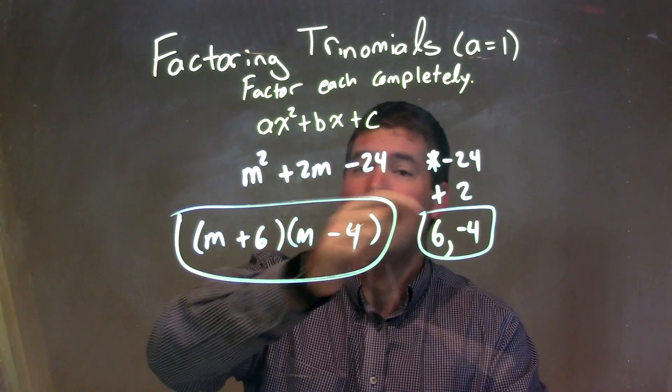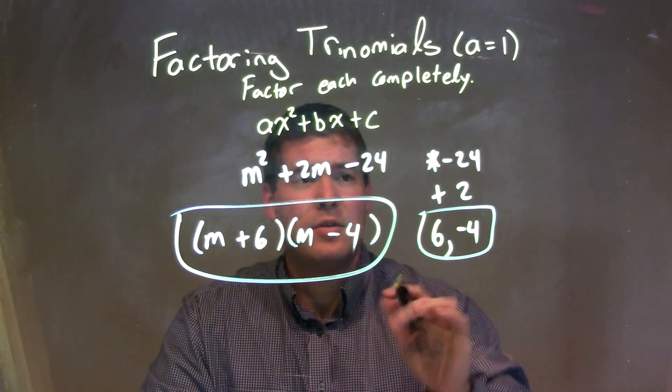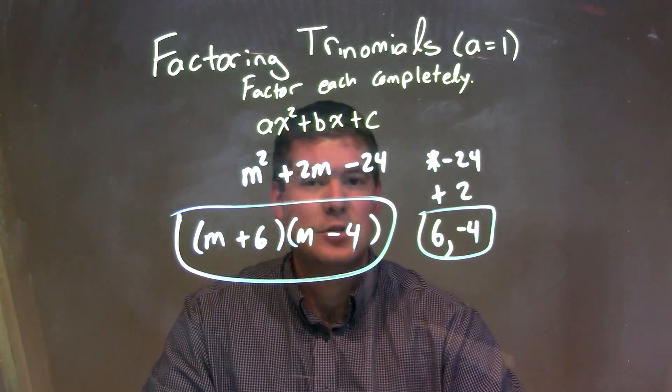So let's recap. We're given m squared plus 2m minus 24. We ask ourselves, what two numbers multiply to be negative 24, but add to be 2.